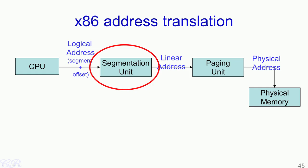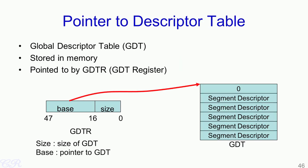Let us see how the segmentation unit is designed in x86 systems. x86 systems have two types of descriptor tables: one is known as the local descriptor table while the other is known as the global descriptor table. The global descriptor table is stored in memory and has a format with the first field being 0 followed by segment descriptors. This global descriptor table is pointed to by a register known as the global descriptor table register, or GDTR. The GDTR is a 48-bit register where the least significant 16 bits contain the size of the GDT while the upper bits contain the base address, that is the pointer to the GDT.